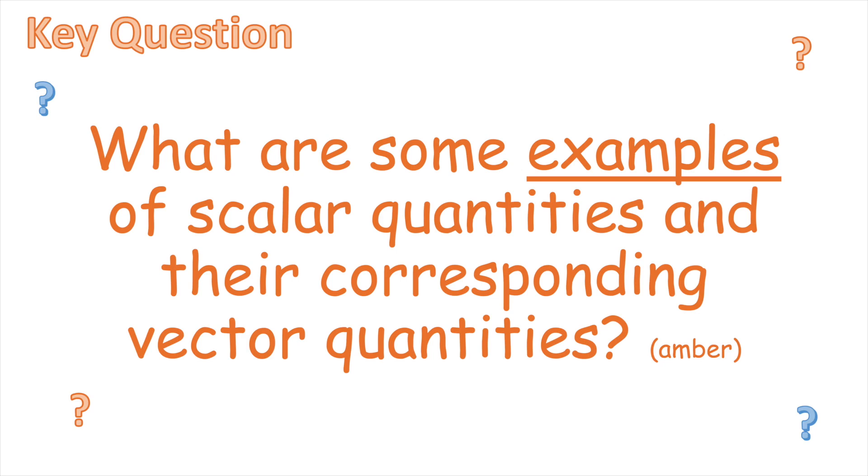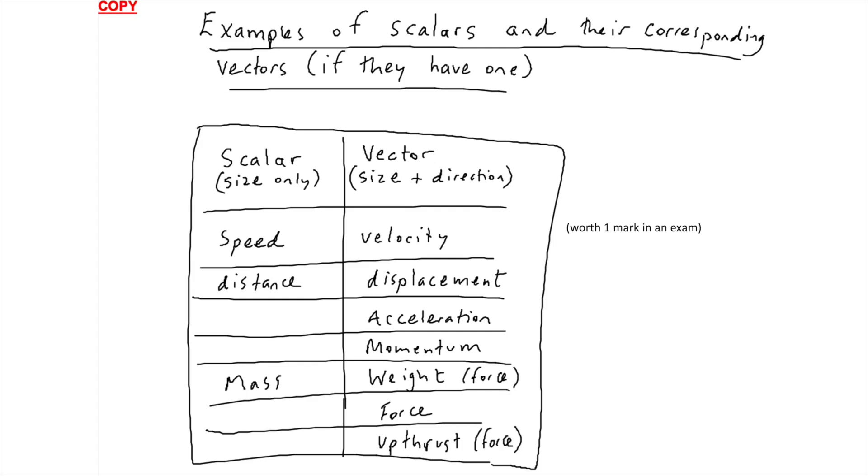What are some examples of scalar quantities and their corresponding vector quantities? I've seen this in an exam a number of times. It's just worth one mark, but it's worth having. So you've got scalars down in this left-hand column. You've got vectors down in the right-hand column.